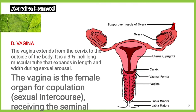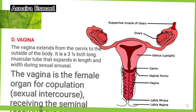Vagina. The vagina is a muscular canal lined with nerves and mucous membranes. It connects the uterus and cervix to the outside of the body, allowing for menstruation, intercourse, and childbirth.